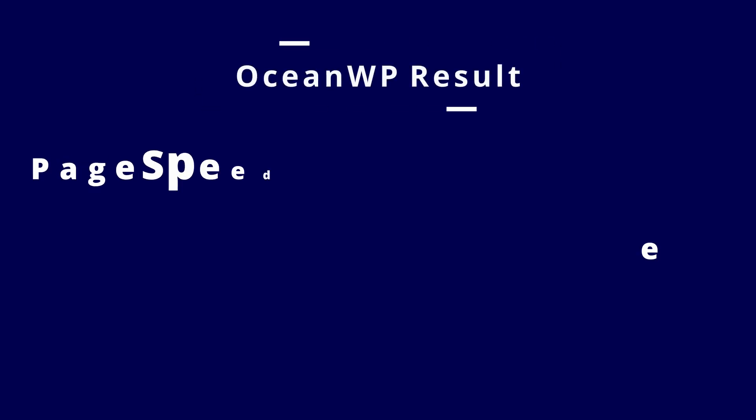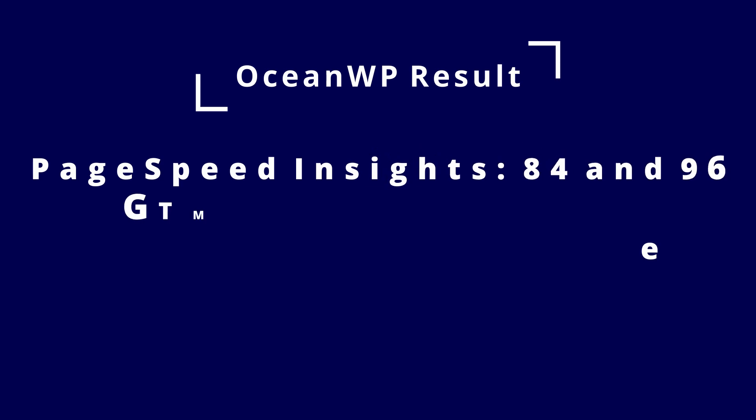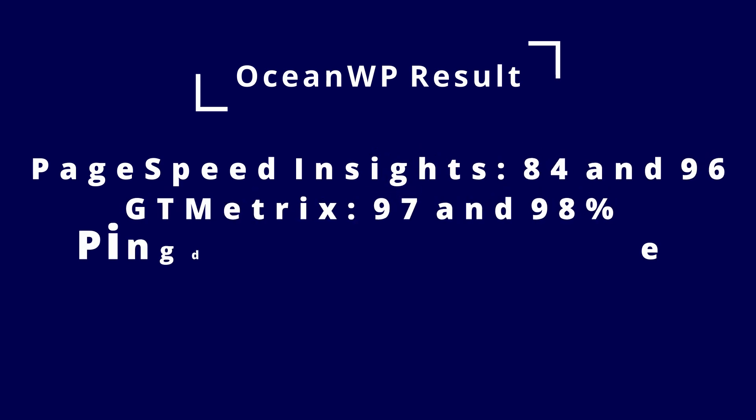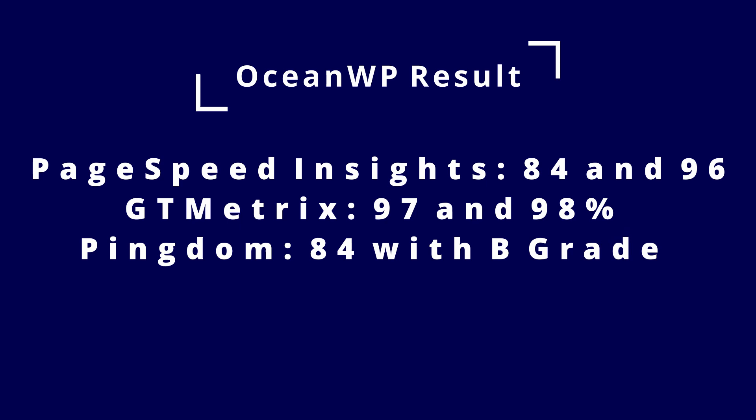On the other hand, OceanWP scored 84 and 96 on Google PageSpeed Insights for mobile and desktop respectively. On GTmetrix, it scored 97% for performance and 98% for structure. On Pingdom, it scored 84 with a B grade, a page size of 1.1 MB, a load time of 1.22 seconds, and 25 requests.